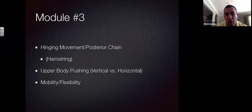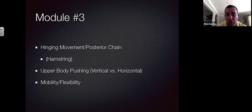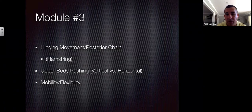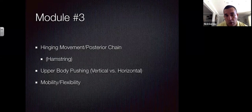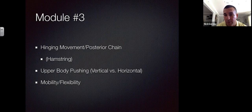Module three also includes upper body pushing: one day vertical push, the next horizontal push — bench press versus seated press or jerk, for example. We try to keep the jerk in module one as an explosive movement, but on a two-day training week we'll move it to the pushing slot. We follow up with mobility and flexibility, considering what's coming next in the following module.